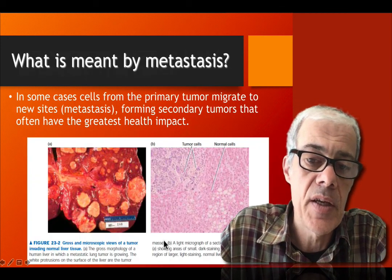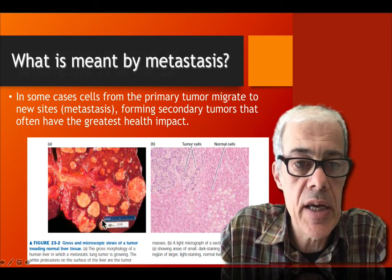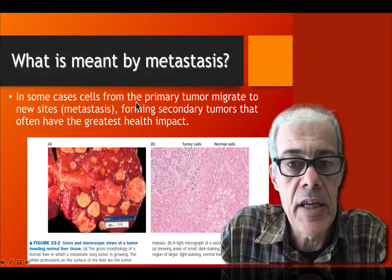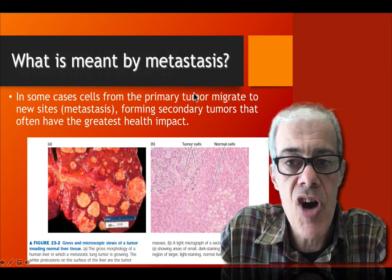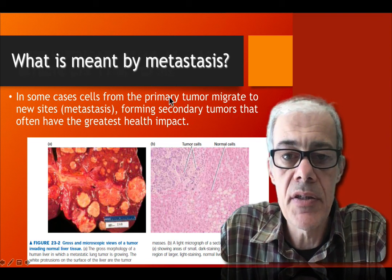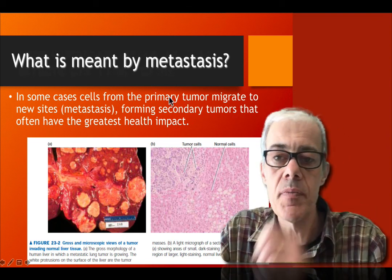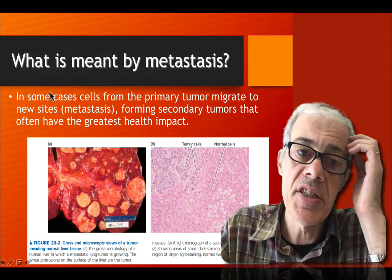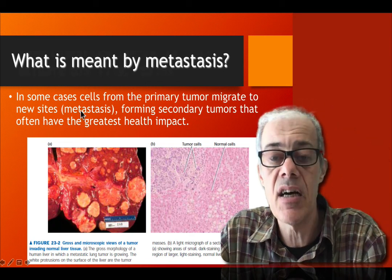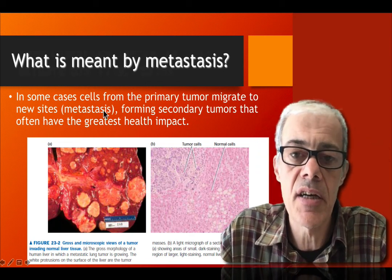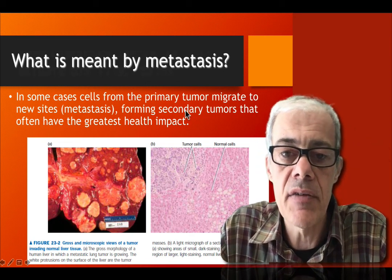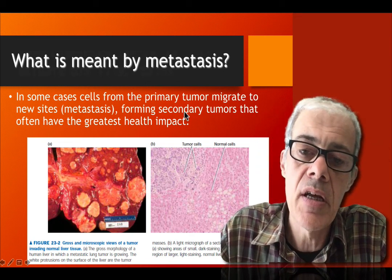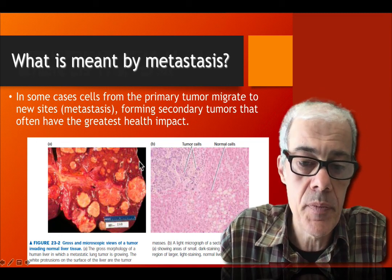A primary tumor occurring in one tissue can migrate to a second site — in other words, it can metastasize to a second site and form tumors within otherwise healthy tissue.